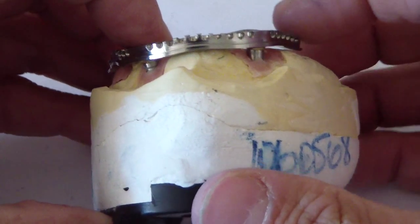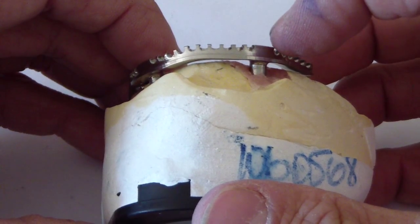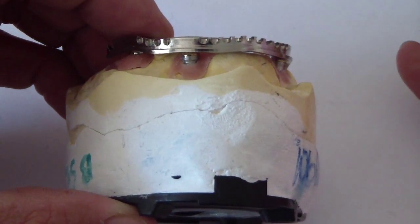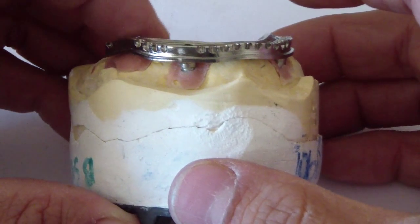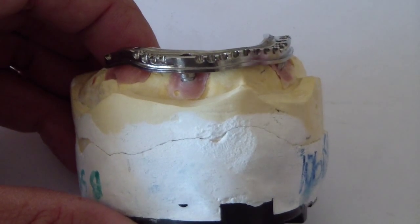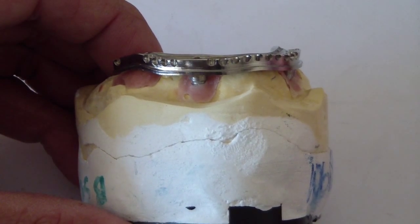So once you can verify that this is seated passively on the radiograph, that's it. That's the Sheffield Test, fairly straightforward and then you can hand torque down the rest or full torque or I mean every protocol is a little different.